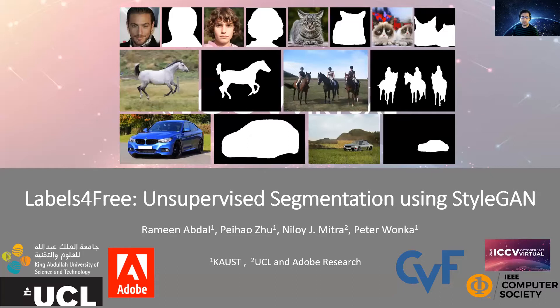What is Labels for Free? Let me first introduce our framework and explain what it does. Labels for Free is an unsupervised framework which segments class-specific StyleGAN images into foreground and background. The results can then be used to generate segmentation masks for training supervised segmentation networks. Here we show some results on real and synthetic images with complex backgrounds.